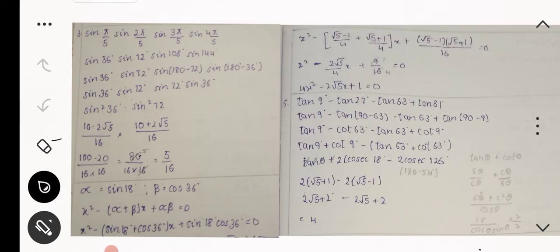Now the third question: prove that sin(π/5)·sin(2π/5)·sin(3π/5)·sin(4π/5) = 5/16. This becomes sin(36°)·sin(72°)·sin(108°)·sin(144°). Now sin(108°) can be written as sin(180° - 72°) and sin(144°) as sin(180° - 36°).